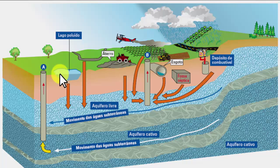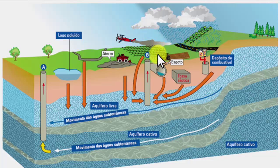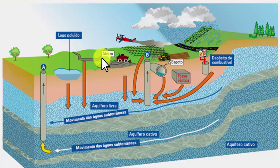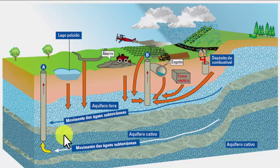Otra cosa que podemos hacer es contaminar los acuíferos con nuestras actividades. Por ejemplo, una avioneta fumigando el terreno con pesticida o fertilizante: cuando cae la lluvia, dependiendo del tipo de elementos químicos utilizados, pueden afectar la salud de la gente. La forma en que disponemos de nuestros residuos líquidos, gaseosos y sólidos también tiene que ver con la calidad de estas aguas que se encuentran en diferente estratigrafía.